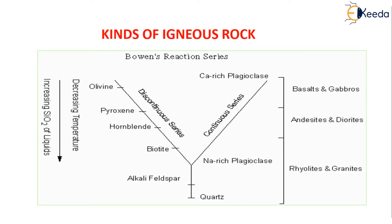The kinds of igneous rocks are understood by Bowen's reaction series. There is a continuous series — on one side there are alkali feldspar, biotite, hornblende, pyroxene, and olivine. It comes from basalts and gabbros to andesites and diorites. Rhyolites and granites are formed at decreasing temperature. As the temperature decreases, there is an increasing amount of SiO2 in the liquid. These are the formations of the different igneous rocks.